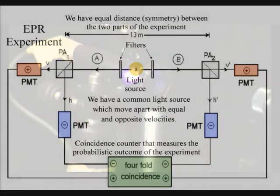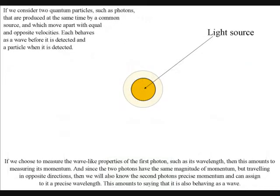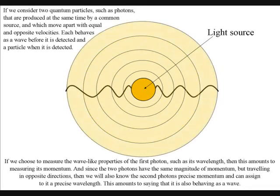If we consider two quantum particles such as photons that are produced at the same time by a common source and which move apart with equal and opposite velocity, each behaves as a wave before it is detected and a particle when it is detected.